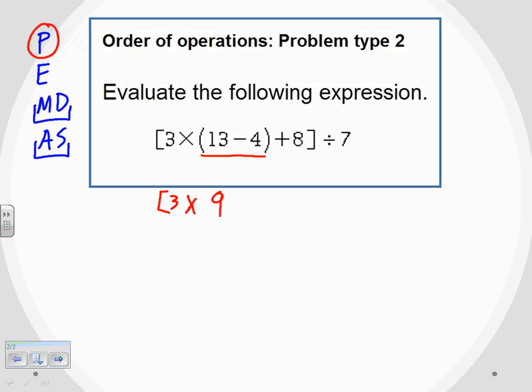So three times nine, I bring down everything else plus eight, close that bracket, and I've got the divided by seven outside. Okay, so we've done our first parentheses.